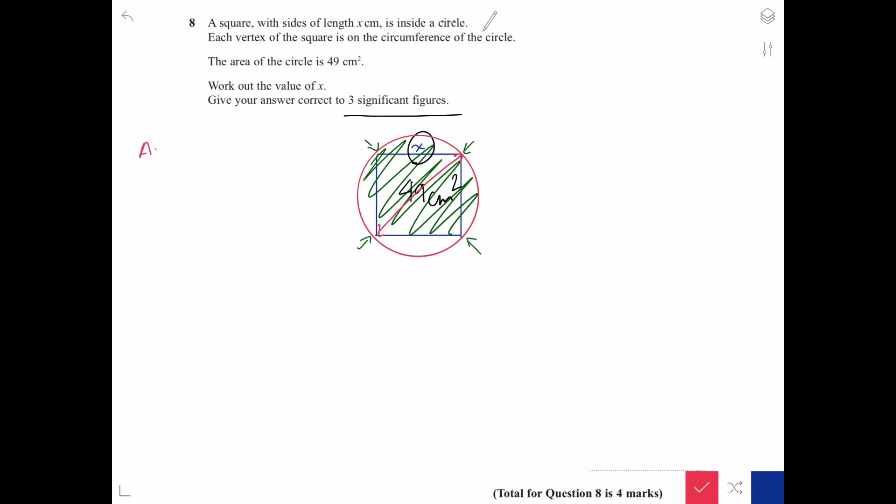The formula for the area of the circle is πr². The question said the area of the circle is 49 centimeter square, so πr² equals 49 cm². In order to find the diameter I need to first find the radius and multiply that by 2. So first I will divide 49 by π and square root it.